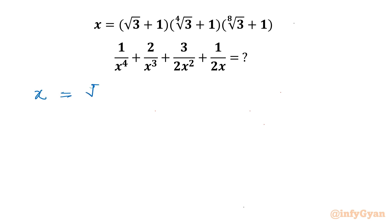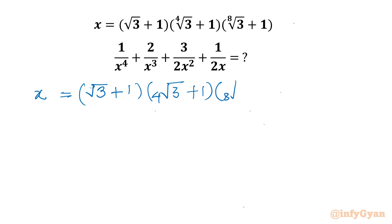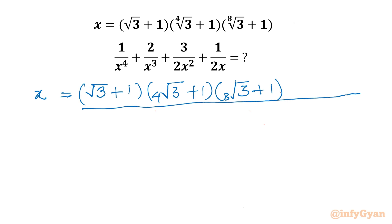I will write (root 3 + 1) times (4th root 3 + 1) times (8th root 3 + 1). And then I will use one manipulation step: I will multiply numerator and denominator with (8th root 3 − 1).